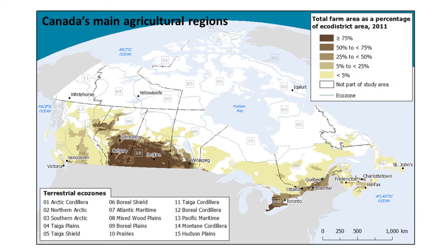The focus of the previous video was about changes in Canadian cropping systems over time, from the 1930s to today. Now I'm going to focus on regional or spatial differences in Canadian cropping systems. To do that, I'm going to first introduce Canada's five main agricultural regions.